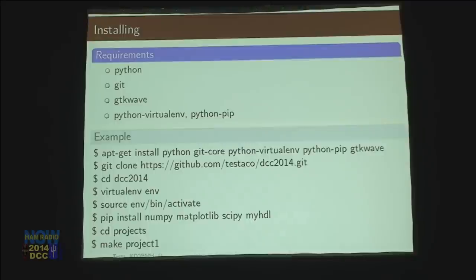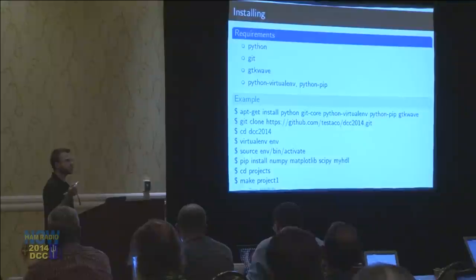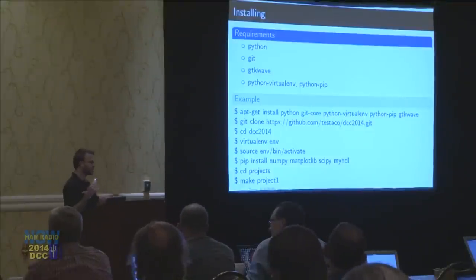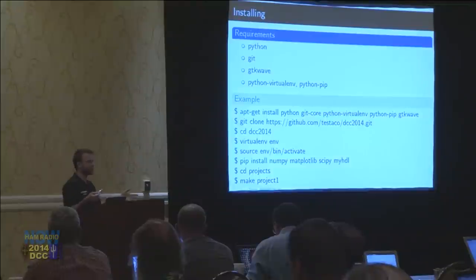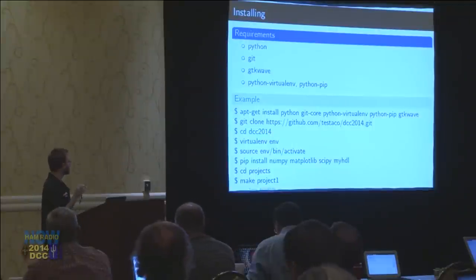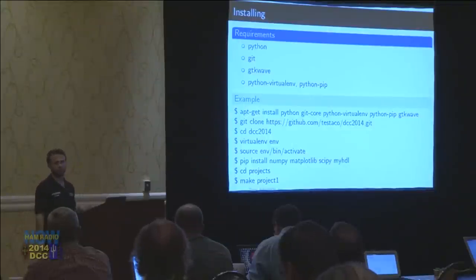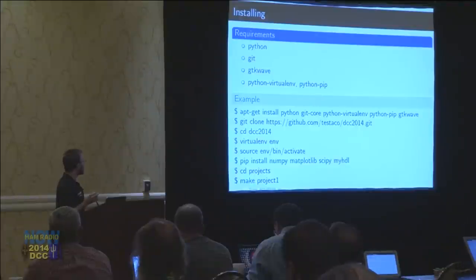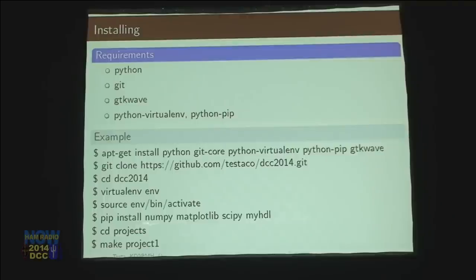I use a virtual environment, which is useful because if your operating system uses Python extensively and you want to use different versions of stuff, you can create this little virtual environment and run a whole new Python world inside of it — a whole new version of Python, all new libraries. Then I install these critical libraries: numpy, matplotlib, scipy — we're going to talk about those in the next two lectures a lot — and myHDL. And then you can change into the projects directory and run make project1.